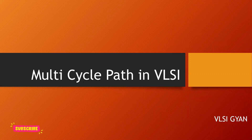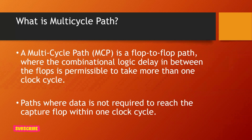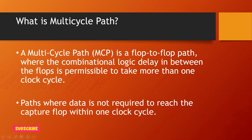Multi-cycle path is a flip-flop to flip-flop path where the combinational logic delay in between these flops is permissible to take more than one clock cycle. You have a flip-flop to flip-flop path and between these two flops there is combinational logic which is a little bit slow — it takes more than one clock cycle to propagate its output. The next flop will not be able to capture the data sent by the launching flop in the next clock cycle, so you need to provide more clock cycle time for the capture flop.